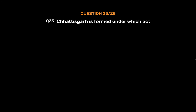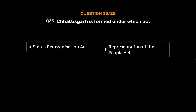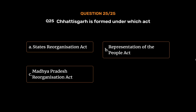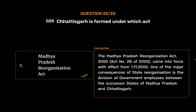Question No. 25: Chhattisgarh was formed under which Act? Option A: States Reorganization Act. Option B: Representation of the People Act. Option C: Madhya Pradesh Reorganization Act. Option D: Chhattisgarh Formation Act. The correct answer is Option C: Madhya Pradesh Reorganization Act. The Madhya Pradesh Reorganization Act 2000, Act No. 28 of 2000, came into force with effect from 1st November 2000. One of the major consequences of this state reorganization is the division of government employees between the successor states of Madhya Pradesh and Chhattisgarh.